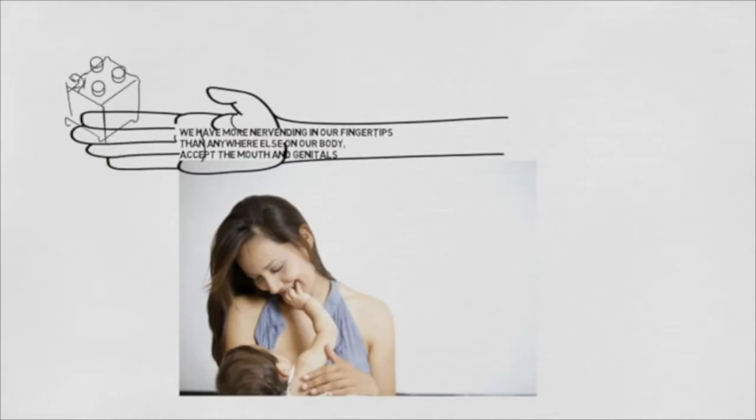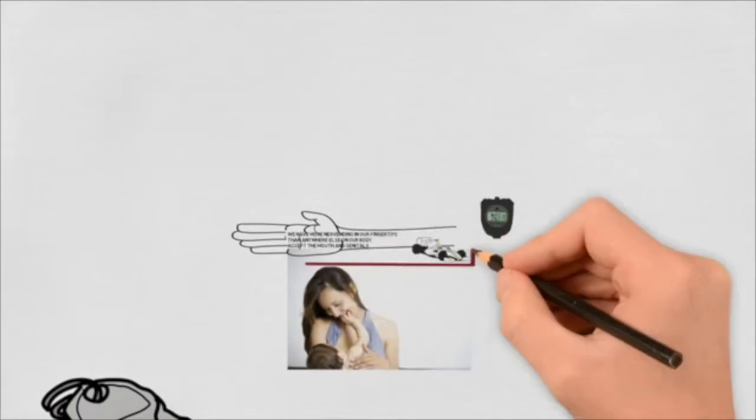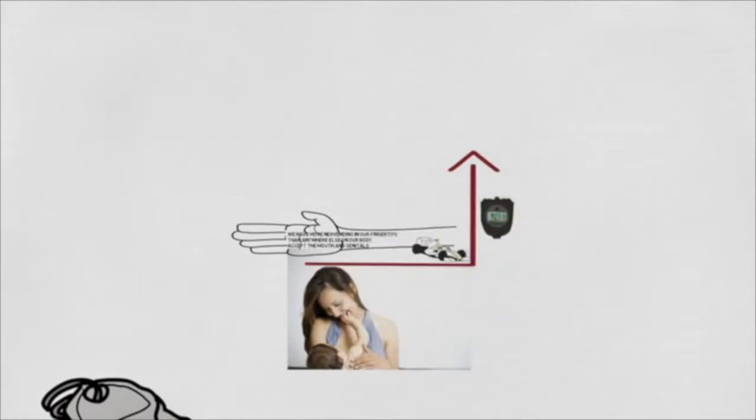Whenever we are touching a teddy or a brick or a screw or a pen, the information moves at 250 kilometers per hour in a quarter of a second from the skin of our fingertips into the brain.